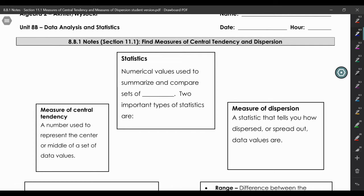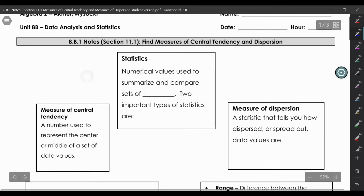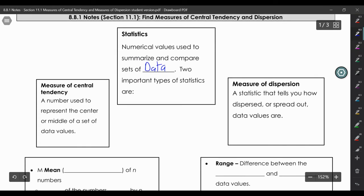When we talk about statistics, they're numerical values used to summarize and compare sets of data. Then we have two types: measures of central tendency, which is used to represent the center or middle of the data set.